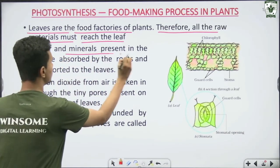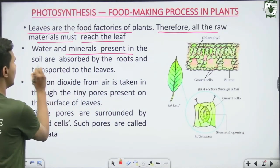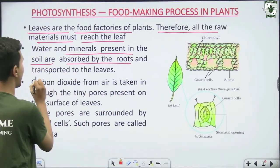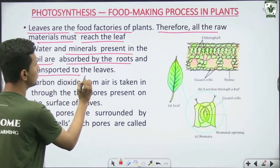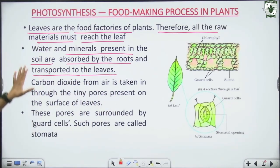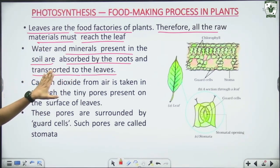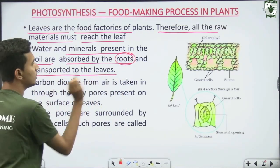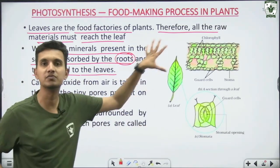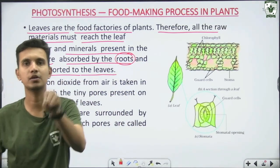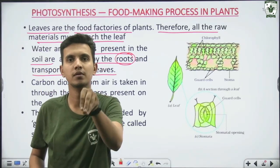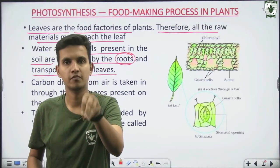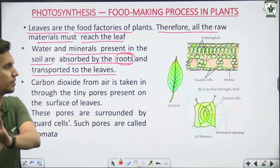Water and minerals present in the soil are absorbed by the roots and transported to the leaves. Carbon dioxide has to be taken in through the leaves. The process of photosynthesis uses these raw materials.